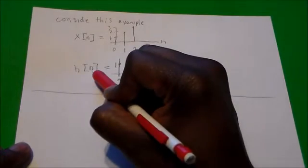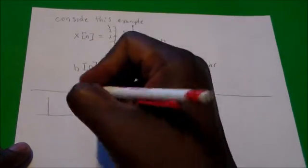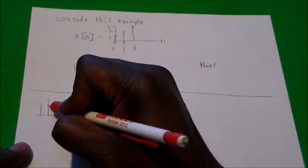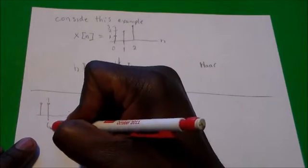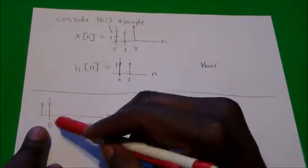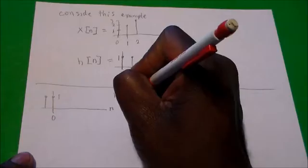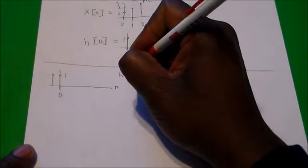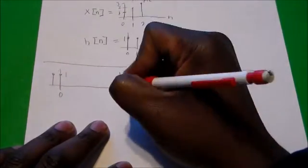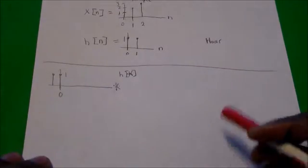First, I'm going to flip h of n. When you flip it about the zero time axis, it goes from the right side over to the left side. So both values are still one, but now we have h of negative k — the flipped version — where the axis variable is k.